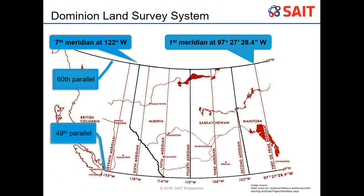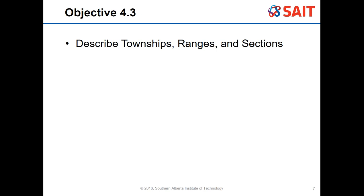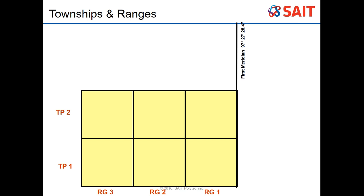Once we created these boundaries, they created townships and ranges. Ranges are along the horizontal going east to west, and the range count starts at range one on the west side of the meridian and counts over to the west. Townships start at the bottom and count upwards, with township values along the vertical axis. The range lines are where we switch from range one to range two.